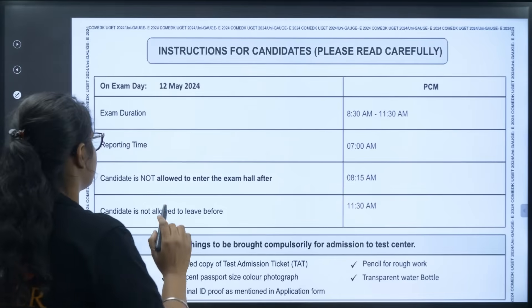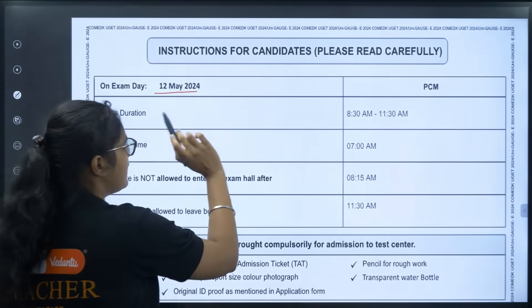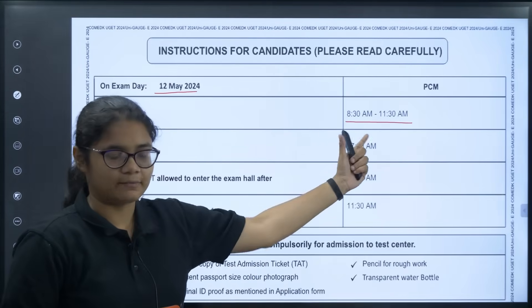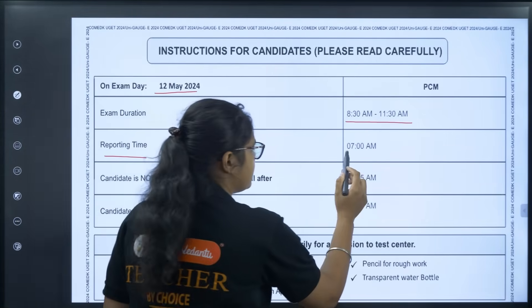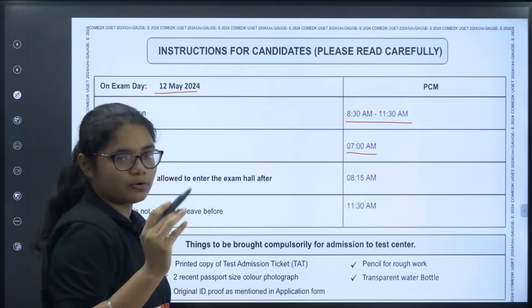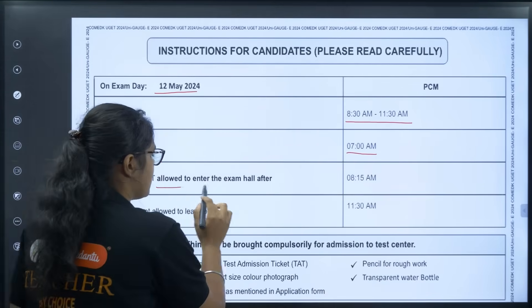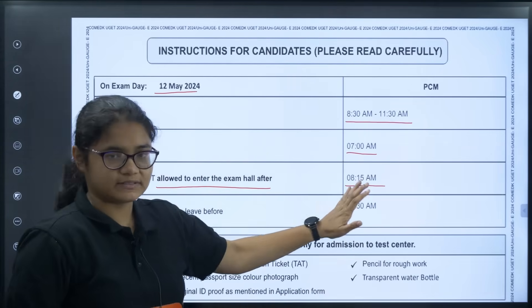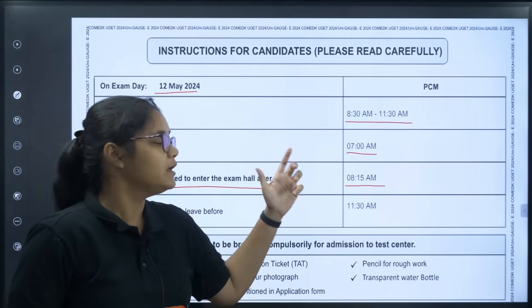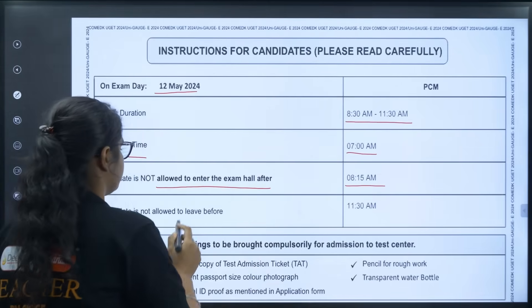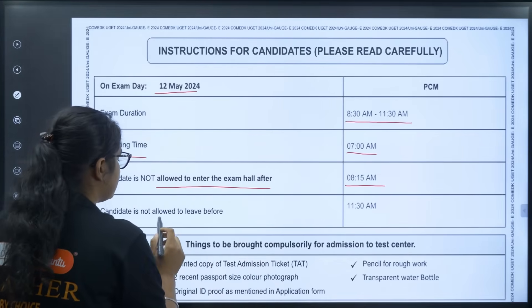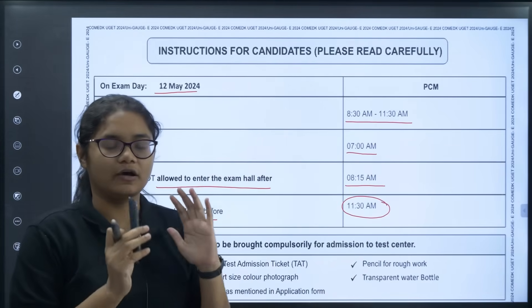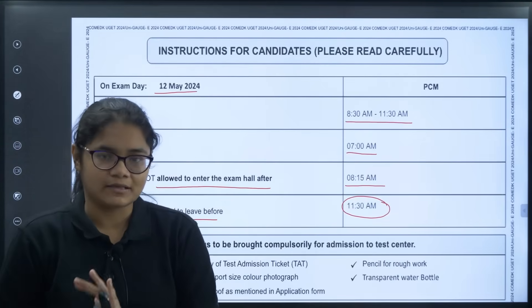Now, here are the instructions for candidates. The exam duration is three hours — based on your session, your time will be given. The reporting time is 7 AM for the morning session, and candidates are not allowed to enter the exam hall after 8:15 AM — that is the gate closing time. So you must reach the exam center before this time. Also, candidates are not allowed to leave before 11:30 AM — you have to sit until the exam is completed.